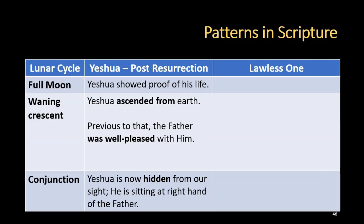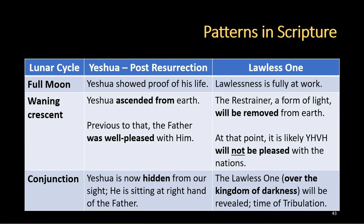Now let's continue looking at this thematic pattern. Next is Yeshua post-resurrection — it begins when Yeshua shows proof of his life. Then Yeshua ascended from the earth, and previous to that the Father was well pleased with him. Yeshua is now hidden from our sight, sitting at the right hand of the Father. Notice we have a shift: instead of descending like leaves do in the fall, Yeshua ascended from the earth — that is a form of opposition. Now let's see what's going on with the lawless one. Lawlessness is fully at work in the earth, and then the restrainer — a form of light — will be removed from the earth. At that point, it's likely that Yehovah will not be pleased with the nations, so we see some opposition taking place in these two parallels.